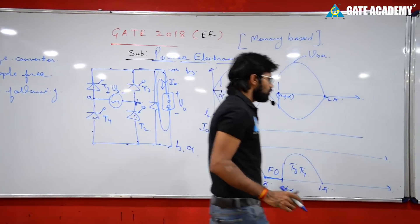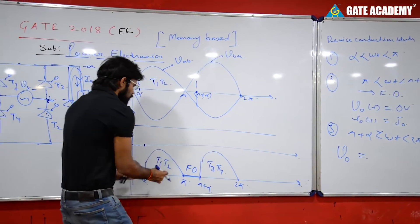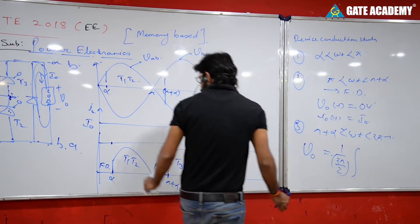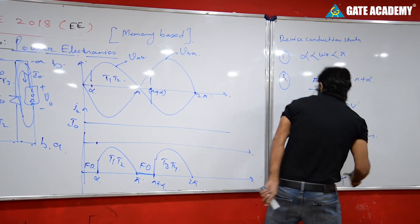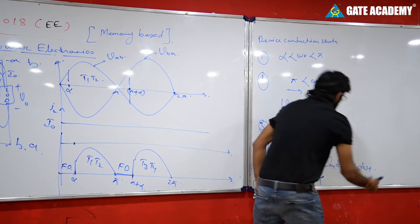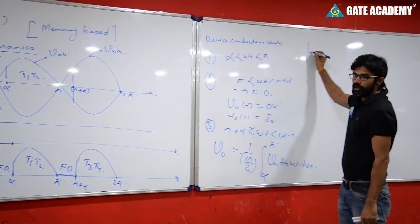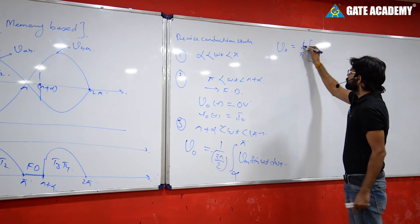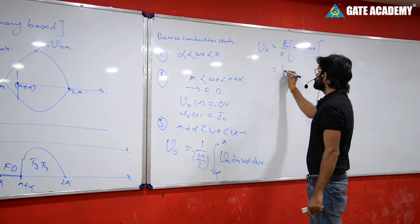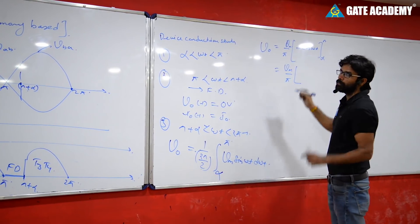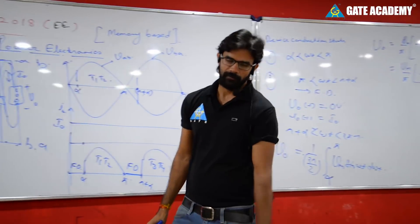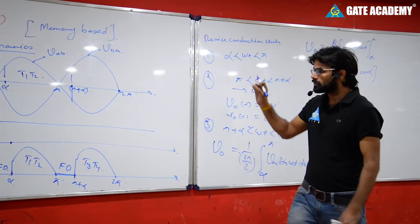Now let's find the average output voltage. For a single-phase full converter: V_not = (1/π) × integral from alpha to π of Vm·sin(ωt) d(ωt). Integrating: V_not = Vm/π × [−cos(ωt)] from alpha to π = Vm/π × (−cos π + cos α) = Vm/π × (1 + cos α). Now you have to check which statement is correct.